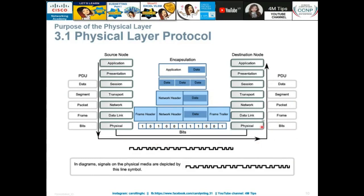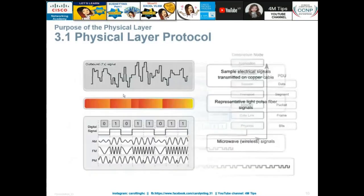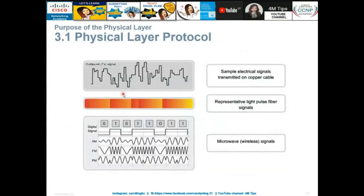The seven layers of the OSI model involve encapsulation going down and decapsulation going up. The encapsulation will happen starting from the session layer, and the PDU name will change from data as it moves down the layers.